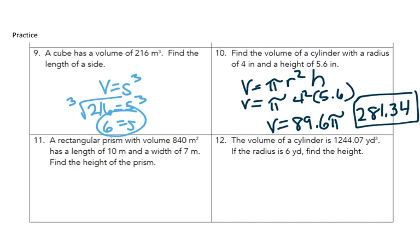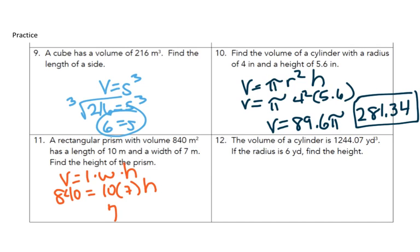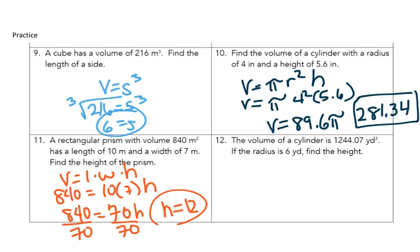The rectangular prism has a volume of 840 meters cubed. Find the height, given that the length is 10 meters and the width is 7 meters. So volume equals length times width times height. We know what the volume is, which is 840. My length and width is 10 and 7. I'm going to multiply 10 and 7, which is 70. I need to get h alone, so I'm going to divide both sides by 70. And my height is 12.